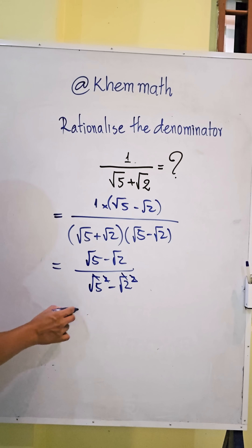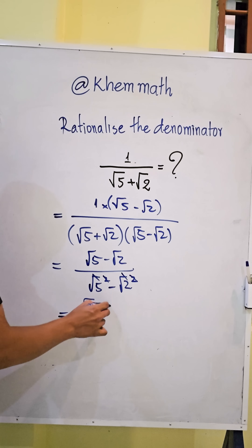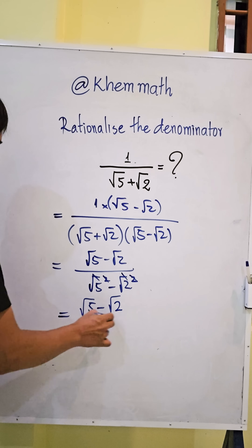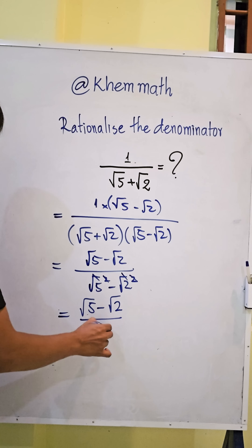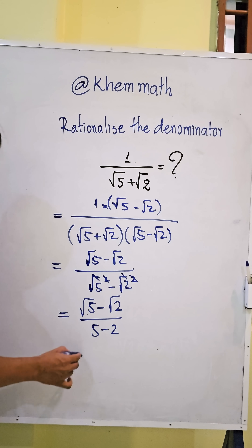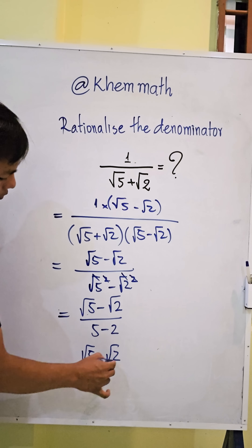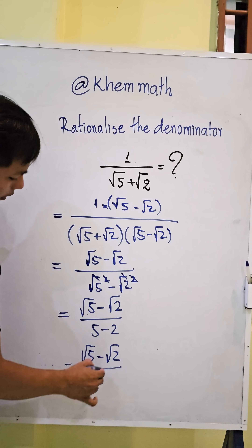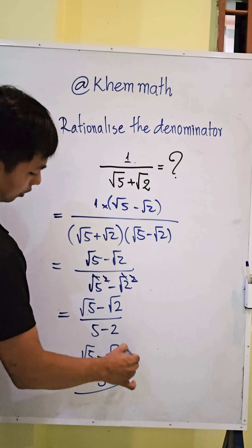We get square root of 5 minus square root of 2, divided by 5 minus 2. And 5 minus 2 equals 3, so our final answer is square root of 5 minus square root of 2, all divided by 3.